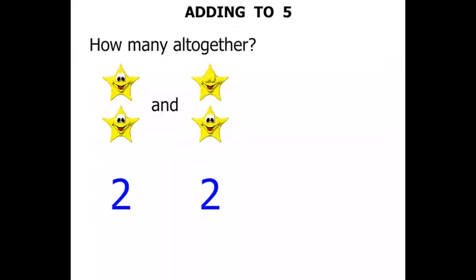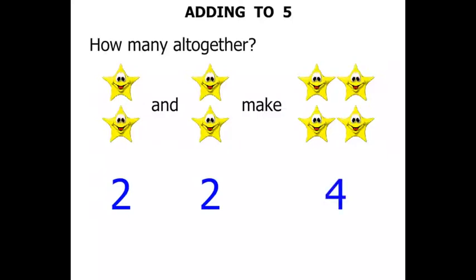So 2 and 2 make... well, let's put them together and let's see how much they make. 1, 2, 3, 4. So 2 and 2 make 4.